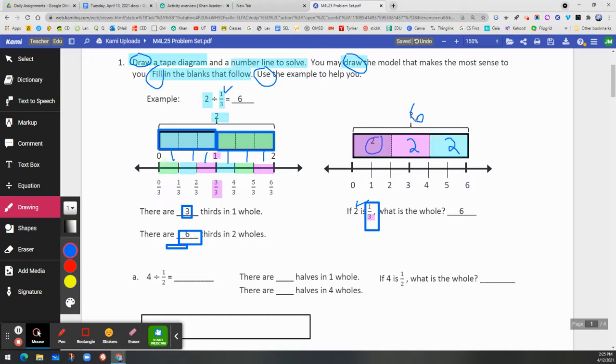So the total, the missing number is the whole, which you write here on the bottom.